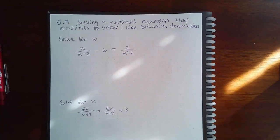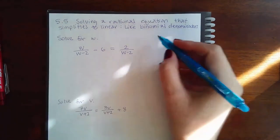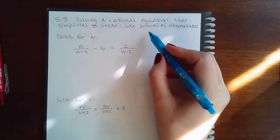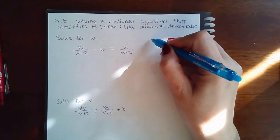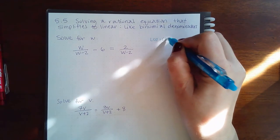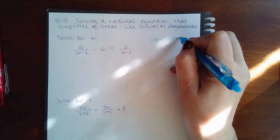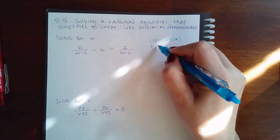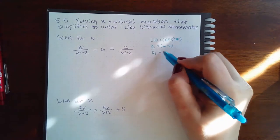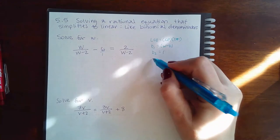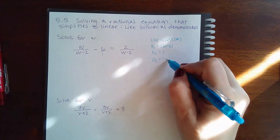Here we have 5.5 solving a rational equation that simplifies to linear like binomial denominators. So if we do the same steps we were doing for monomial denominators, we get that the LCD equals the common factors times the distinct factors. Denominator 1 is w minus 2, denominator 2 is just a 1, denominator 3 is a w minus 2.